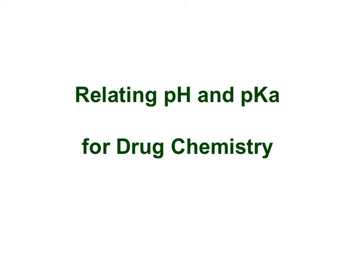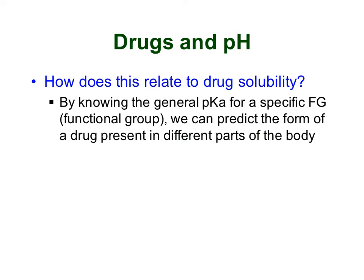In the previous section, we talked about how we could use pH and pKa to determine what form of an acid would be present in a certain solution. Now we're going to apply that to a biological example to see what form of a drug would be present in different pH conditions, like the kinds you would see in your body. Drug solubility is a big deal — it can affect whether or not drugs can even get to where they're trying to go, or whether they'll actually be in an effective form once they get there. By understanding the general pKa for a specific functional group, we can predict the form of a drug that will be present in different parts of your body.